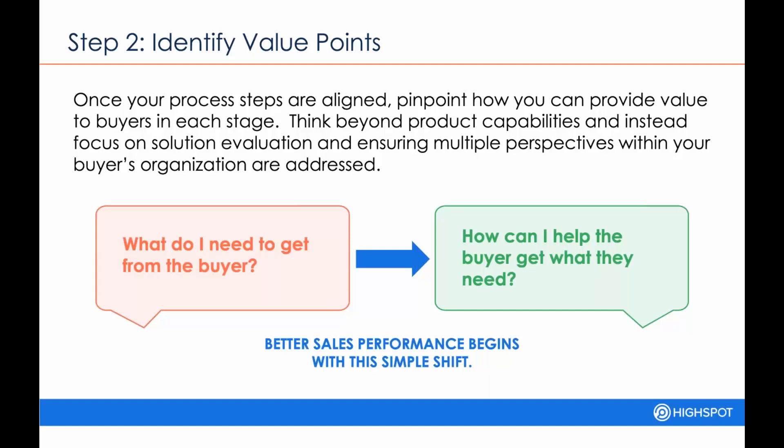The second piece here is really around identifying the value points that you can provide. I also like to add: identify how to handle potential objections based on each of the stages, because they're going to be very different. The value that you can provide and the objections that you're going to have to handle are going to be very different based on what stage you are within the buyer's journey.